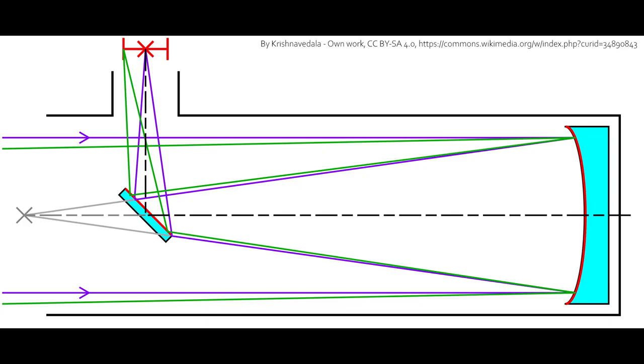The basic layout goes like this. You gather light with the primary mirror. Then the light gets focused. Before it reaches the focal point, it hits the secondary mirror and bounces off the side. There it reaches focus.